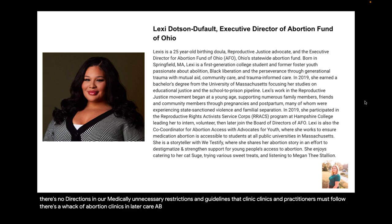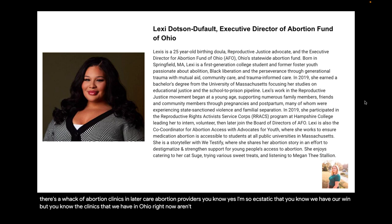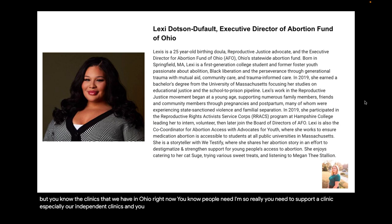The work is far from done. Issue One is not the end-all-be-all. I don't necessarily believe there's any such thing as a haven state, because there are still restrictions and barriers to people accessing care. There are restrictions in our bill that we have to fight — viability clauses, medically unnecessary restrictions and guidelines that clinics and practitioners must follow, and a lack of abortion clinics and later-care abortion providers. The clinics we have in Ohio right now aren't even enough to support Ohioans, never mind Indiana, Kentucky, and West Virginia — states that we've absorbed a lot of people needing care because those states do not have access. We really need to support our clinics, especially our independent clinics.